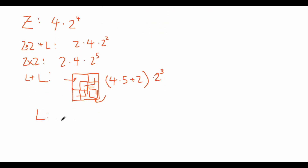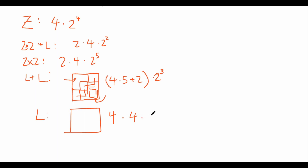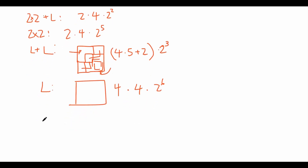Now let's consider the case with one L-tile. We can place it at any of the four corners of the 3×3 square and orient it in any of four ways, giving 4 × 4 placements. We then have six remaining 1×1 tiles, giving 2⁶ choices. For the final case — no special tiles at all, only 1×1 tiles — there are 2⁹ different ways.